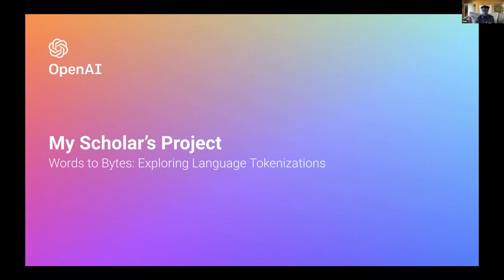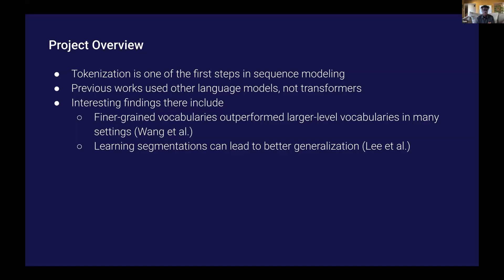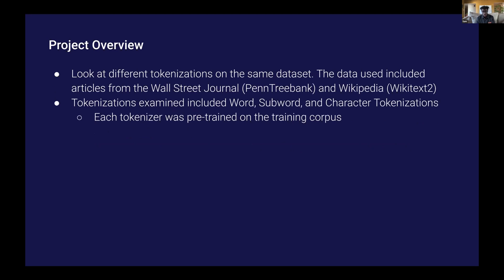So diving into my project. My project basically looked at sequence models and particularly tokenizations on those sequence models. I looked at some previous works on other language models, and there are some interesting findings that led me to focus on tokenizations. The first was that finer-grained tokenizations outperformed larger-level tokenizations. So if you have more subwords in your vocabulary, those models outperformed models with just really big words in the vocabulary. Additionally, learning the segmentations could lead to better generalizations. For my project, I took a look at different tokenizations on the same dataset. The data I used included articles from Wall Street Journal and articles from Wikipedia. I looked at word, subword, and character tokenizations, and each tokenizer was pre-trained on the training data.